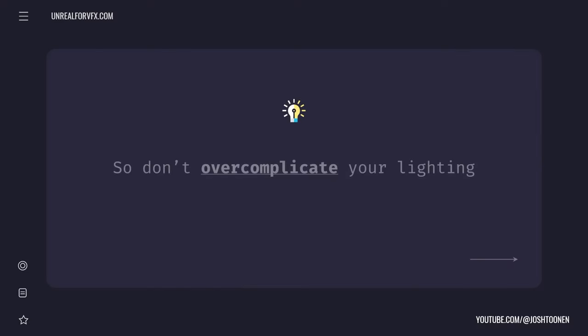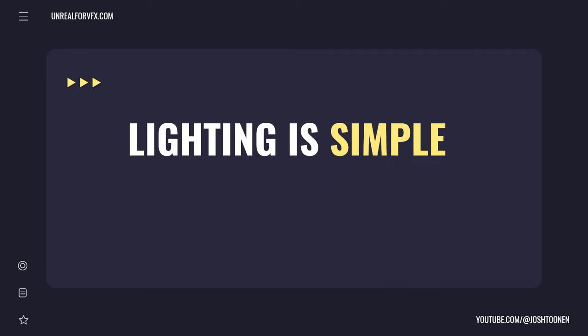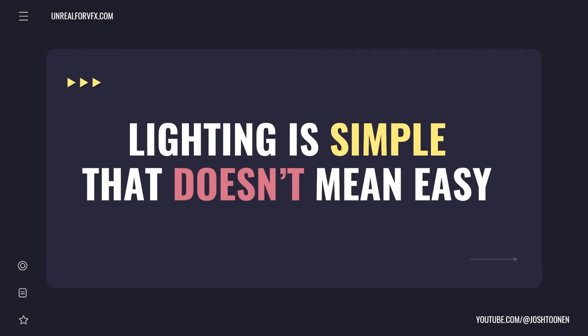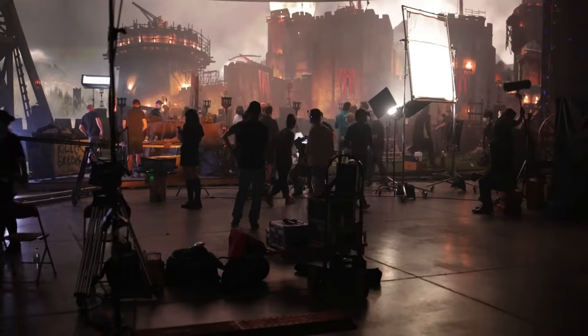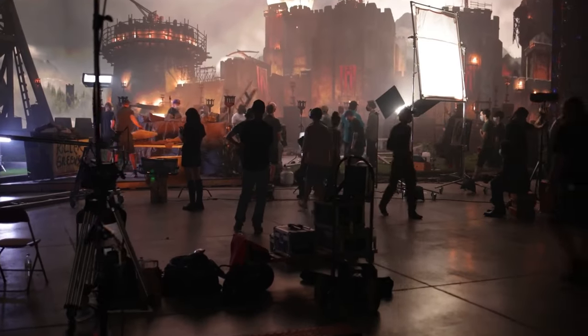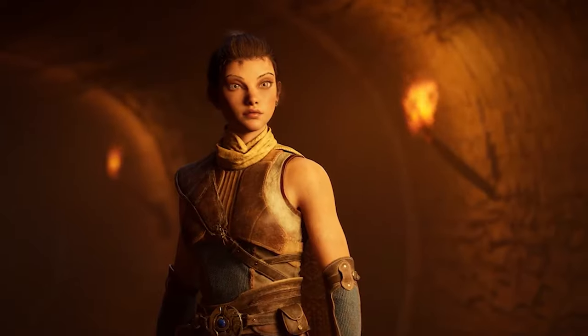There's a tendency to over-complicate things. At the end of the day, lighting is simple — that doesn't mean it's easy, but it is simple. We need to think: how can we use these five lights to recreate the type of lighting that you would find on a film set?